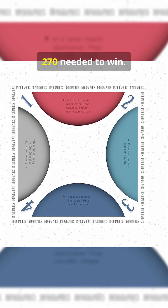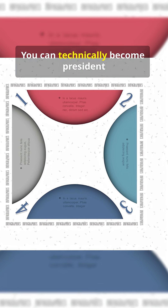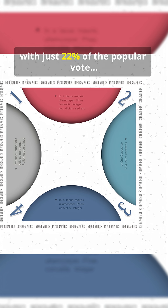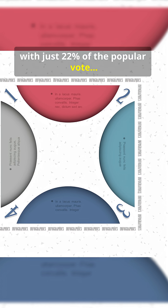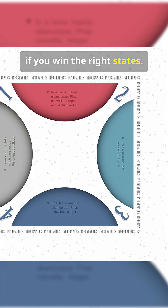270 are needed to win. You can technically become president with just 22% of the popular vote, if you win the right states.